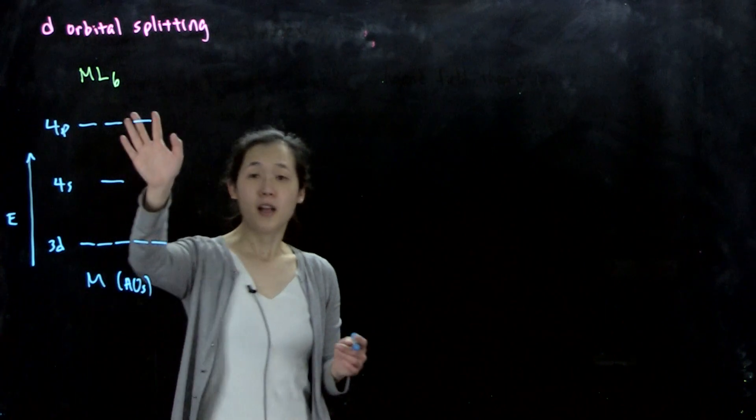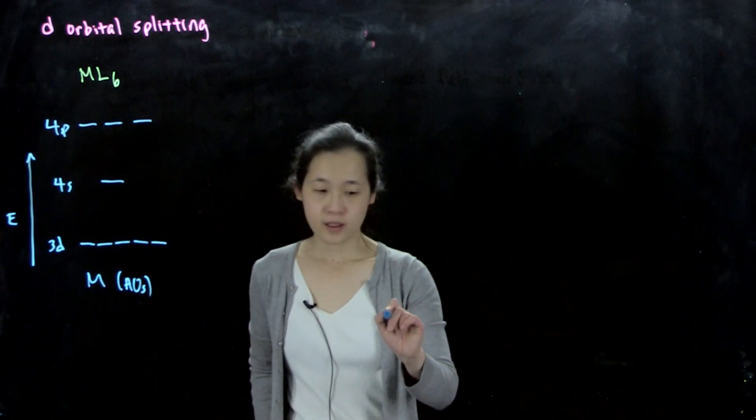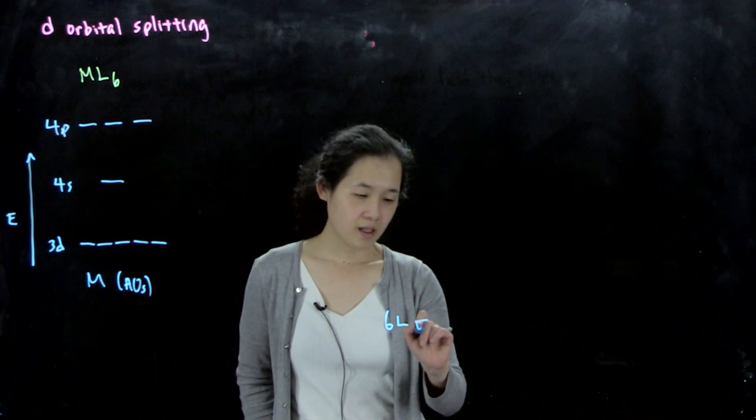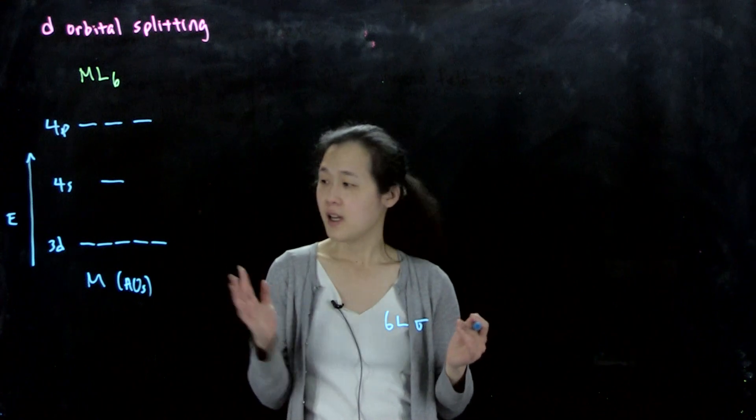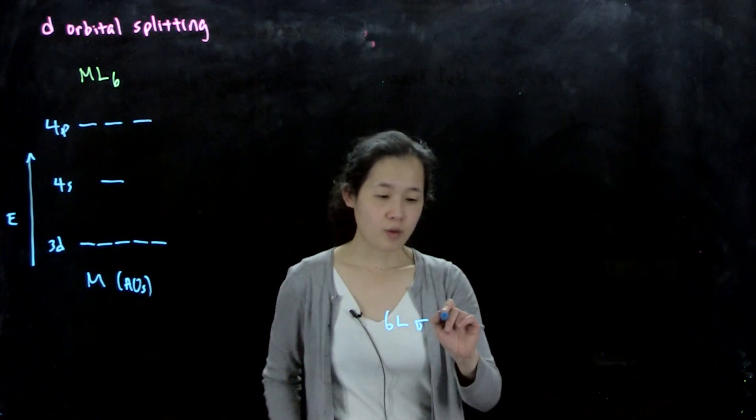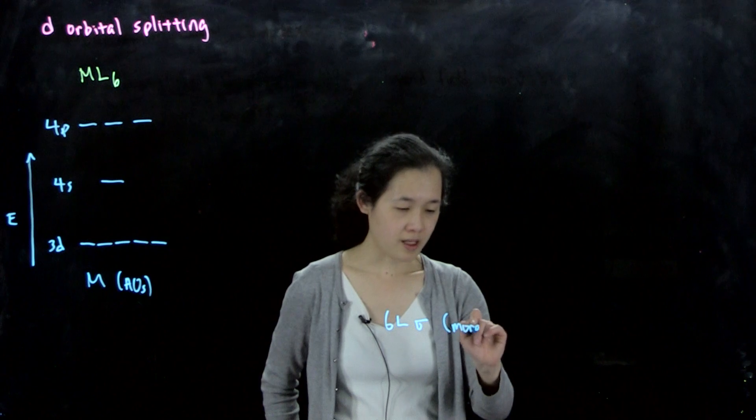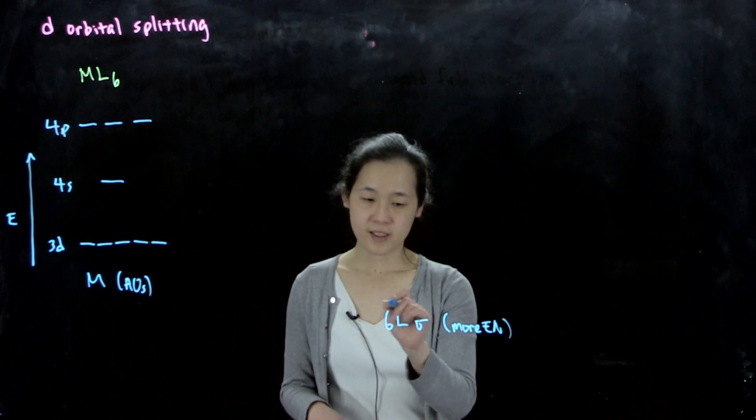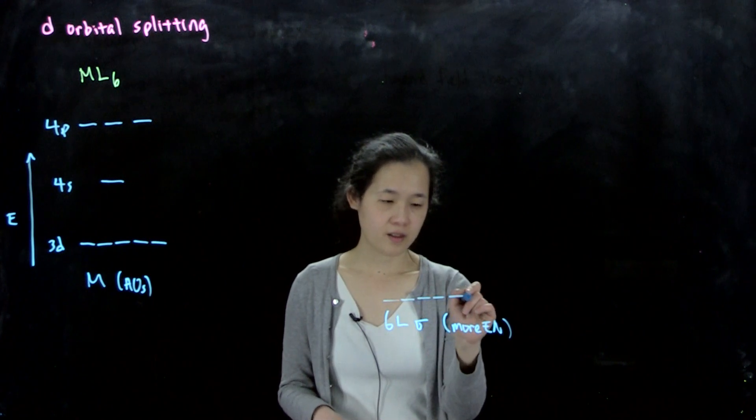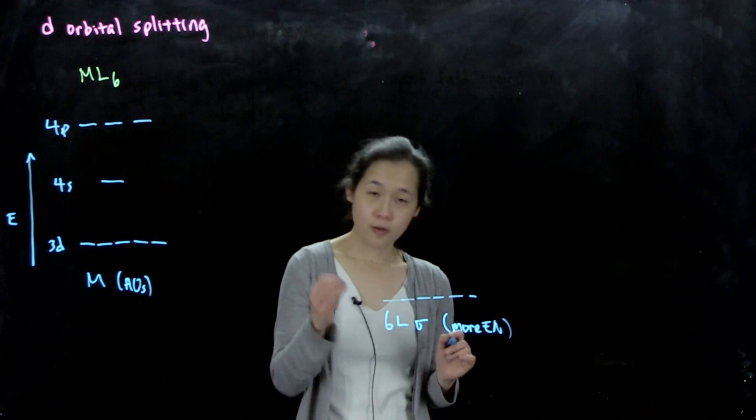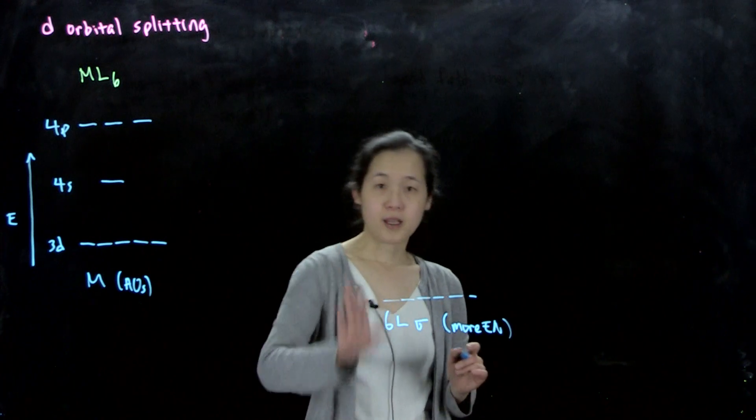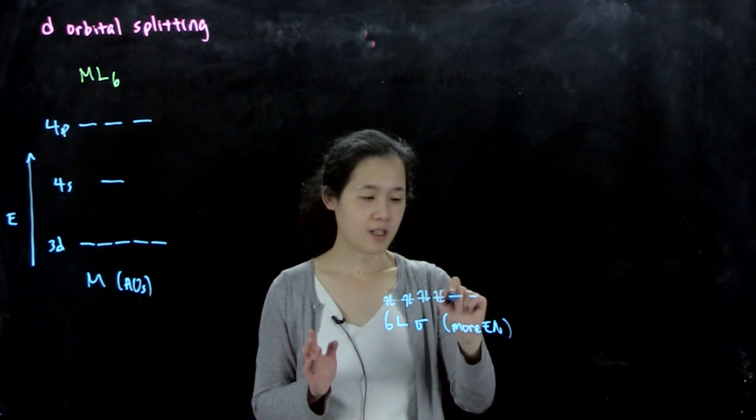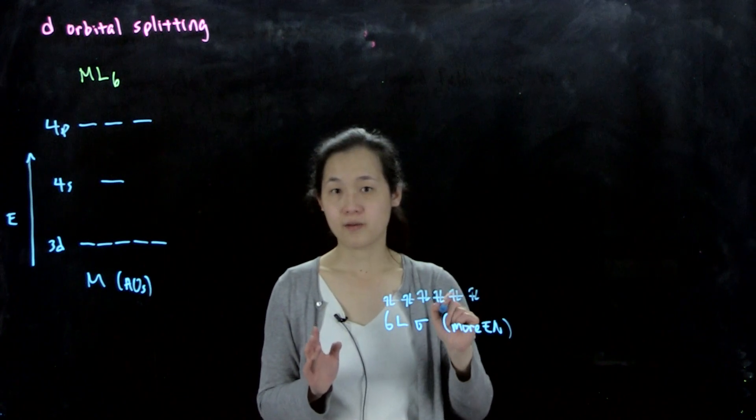Here's our metal, and then we have our six ligands over here. If we only consider them like sigma-type ligands, we can consider them like s orbitals. Typically, these are more electronegative than the metal, so these will be lower in energy. These are going to be all filled, because ligands are Lewis bases. They have to have two electrons to donate into the metal.